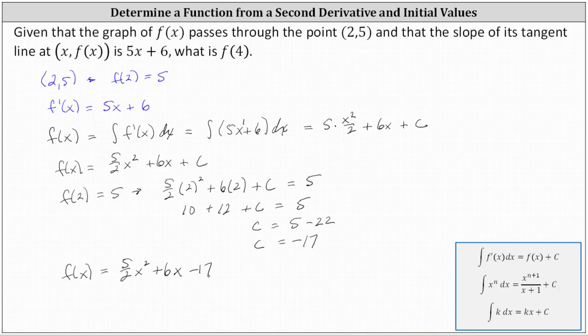So now we can finally answer the question, what is f(4)? f(4) is equal to (5/2) times the square of 4 plus 6 times 4 minus 17, which is equal to 40 plus 24 minus 17, which equals 47. f(4) equals 47.